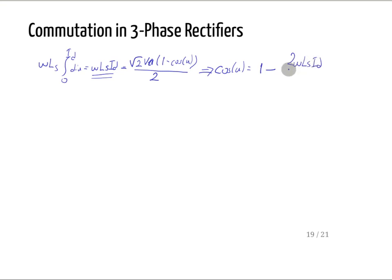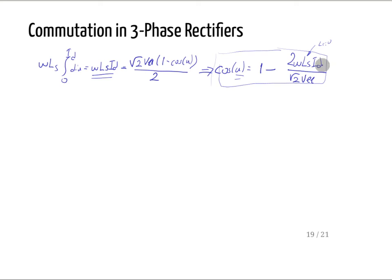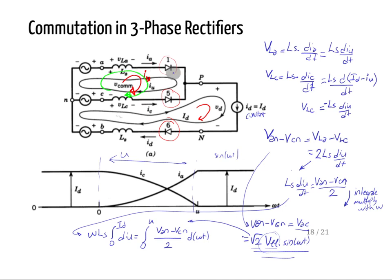We can calculate the commutation time u from that formula. As a sanity check: if Ls = 0, the term is zero, cos u = 1, so u = 0 — no commutation time. Similar to the single-phase case, a larger ID increases commutation time, higher frequency or higher impedance (ω·L) increases it, and higher voltage decreases commutation time.